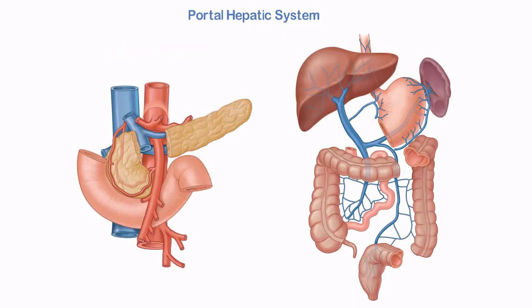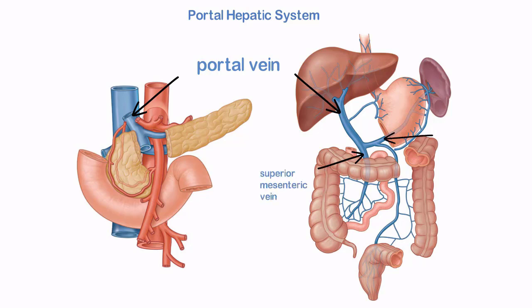The major vessel of this system is the portal vein, which is formed in the retroperitoneum by the union of the superior mesenteric and splenic veins, posterior to the neck of the pancreas at the portal-splenic confluence.